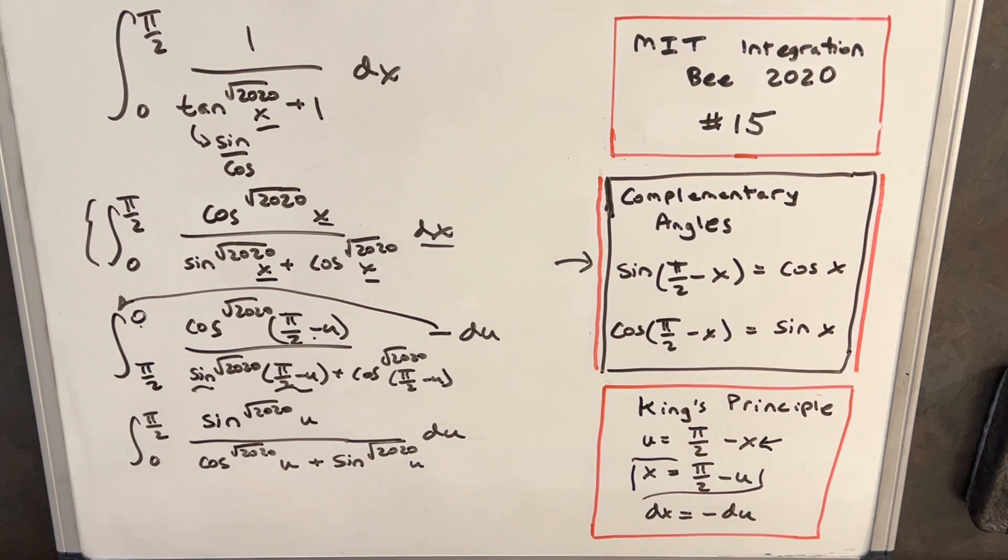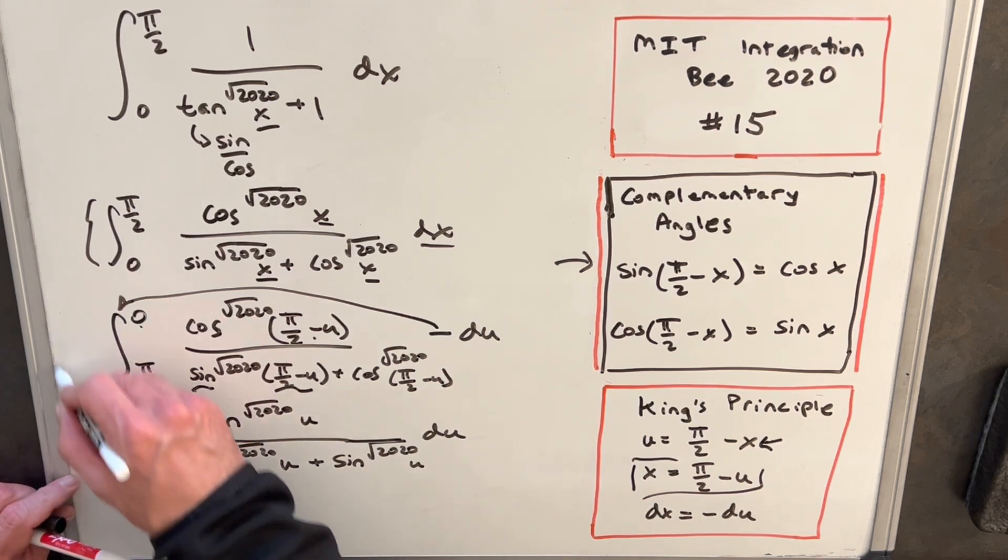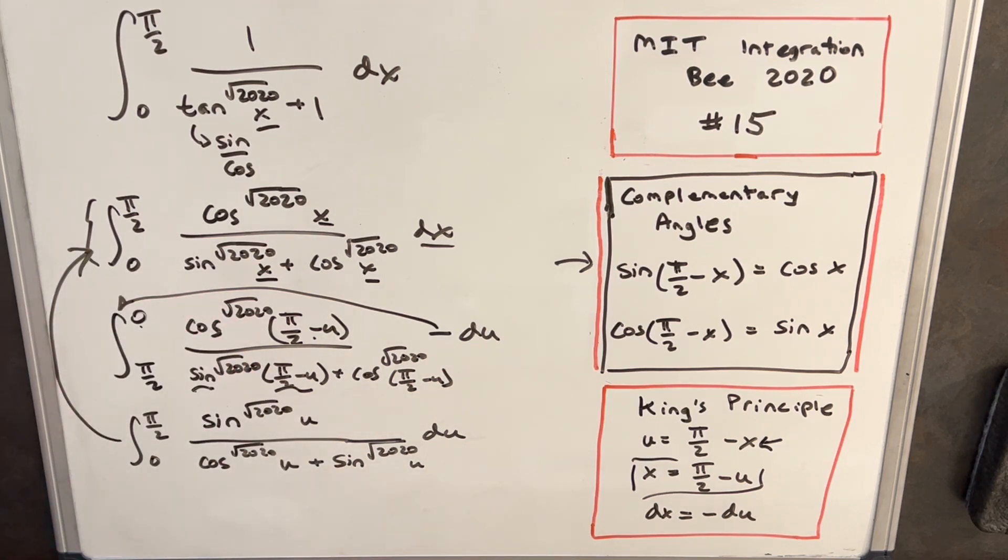And what you notice now is we're getting something back. So when we've made the substitution, this integral is now starting to look very similar to what we had over here. And we can actually change our variable back. We don't have to use u because when we have a definite integral, the variable we can use whatever we want. So I can just change this without any consequences at all. And we'll just change this back to x for convenience.